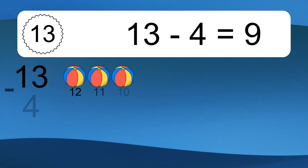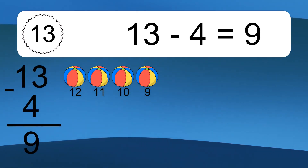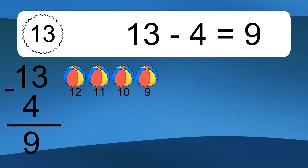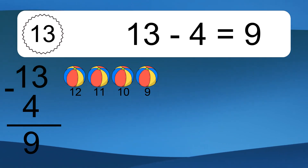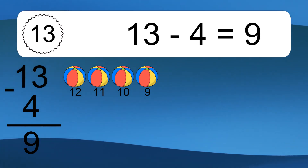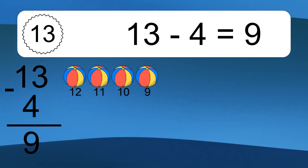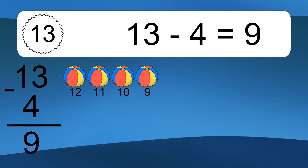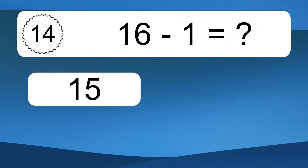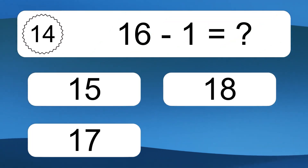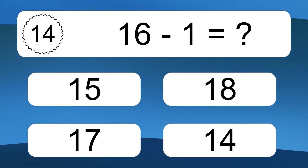13 minus 4 equals what? 13 minus 4 equals 9. Let's count it. 12, 11, 10, 9.